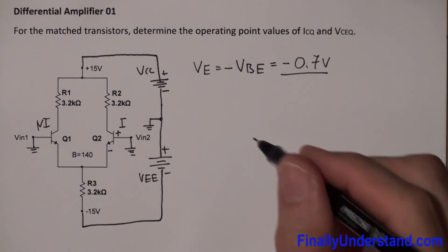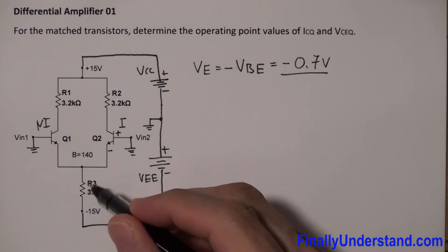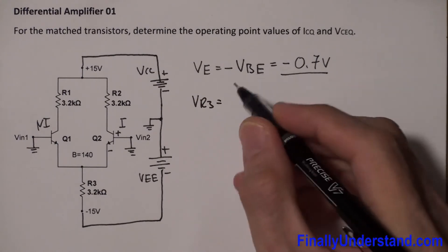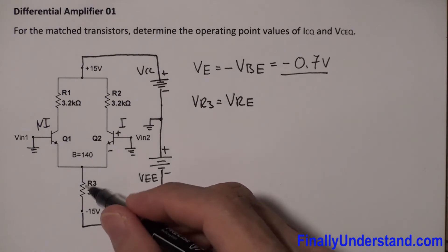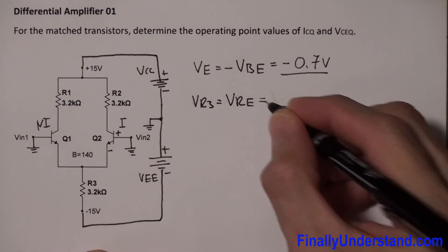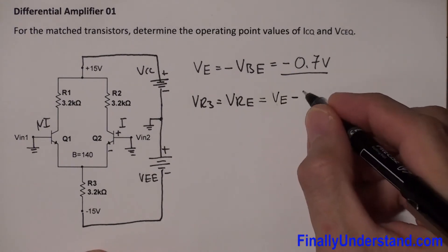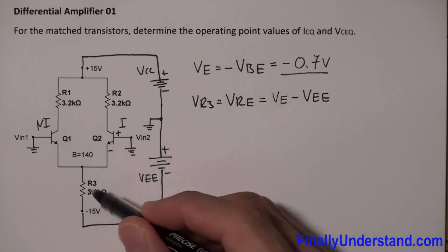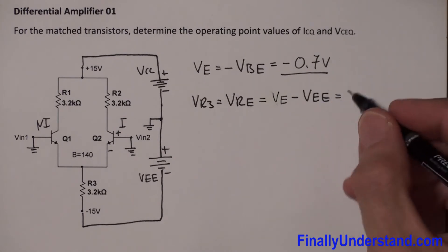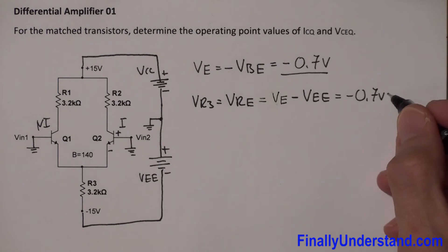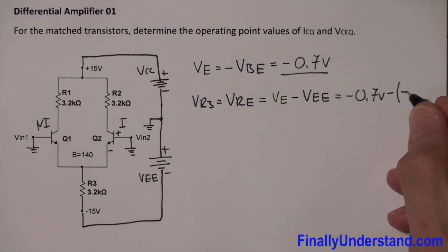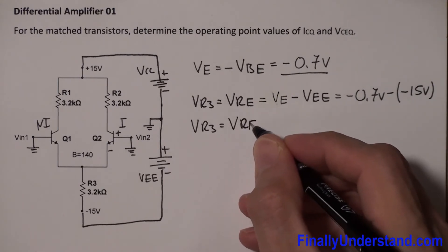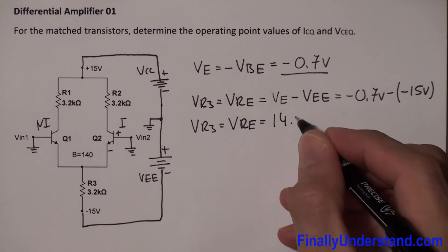Next, I find the voltage across resistor R3. VR3 — also called VRE, the voltage across the resistor connected to both emitters — is equal to VE minus VEE. That is: −0.7 volts minus (−15 volts), which gives VR3 = VRE = 14.3 volts.